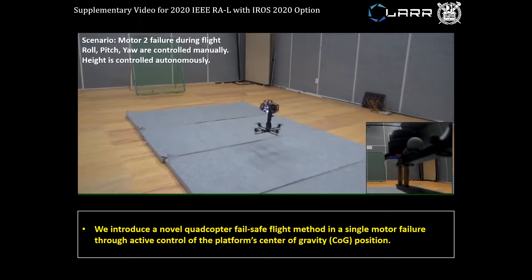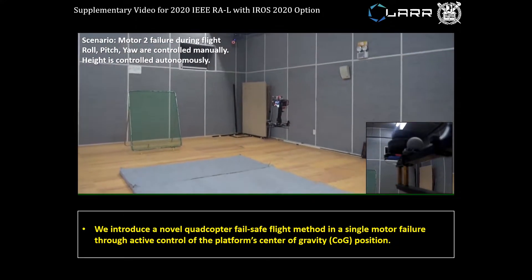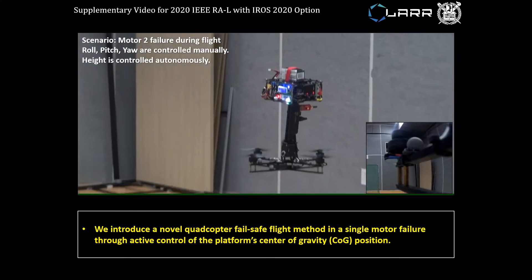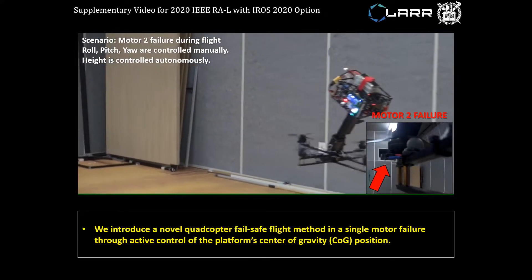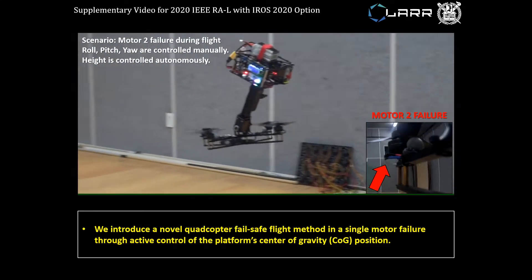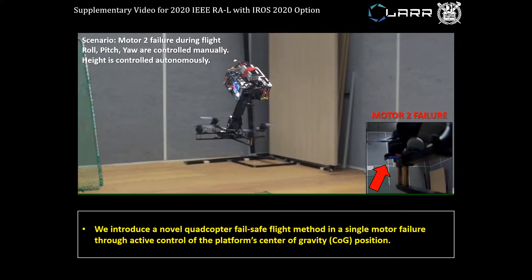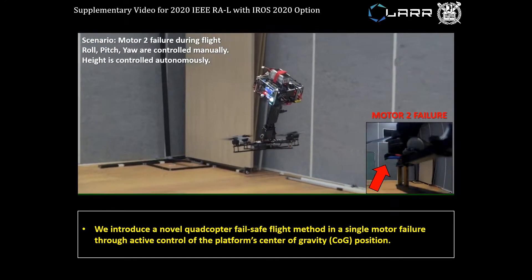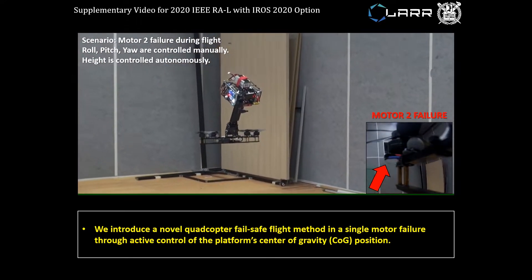In a typical quadcopter flight, the orientation control fails when a single motor failure occurs. In this study, we introduce a novel quadcopter fail-safe flight which overcomes the orientation control failure through active control of the platform's center of gravity position.